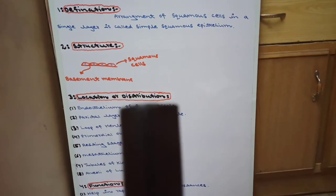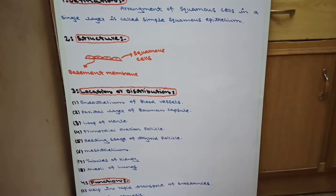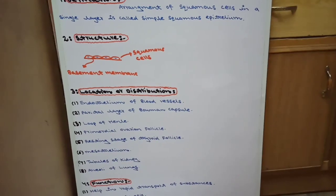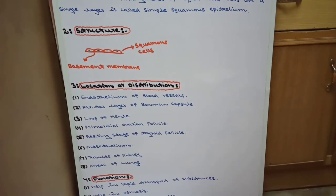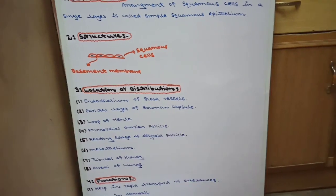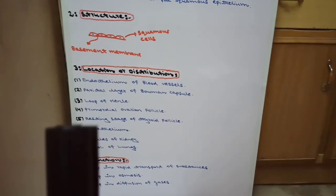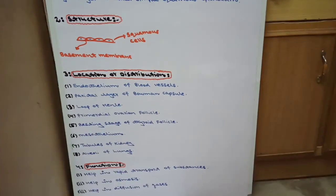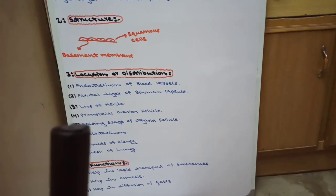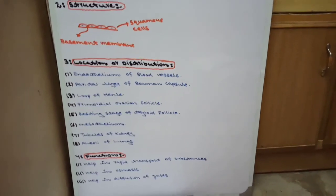The third topic is location or distribution of simple squamous epithelium. There are eight places in our body where simple squamous epithelium is present. Number one: endothelium of blood vessels — the endothelium of blood vessels is lined by simple squamous epithelium. Number two: parietal layer of Bowman's capsule of the kidney — the parietal layer is lined by simple squamous epithelium. Number three: the loop of Henle of the nephron is lined by simple squamous epithelium.